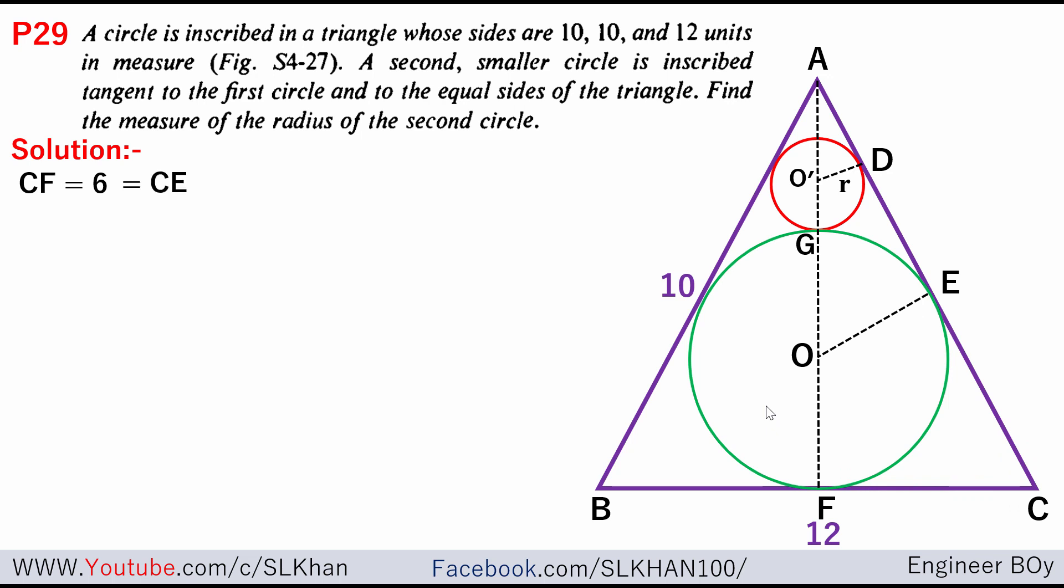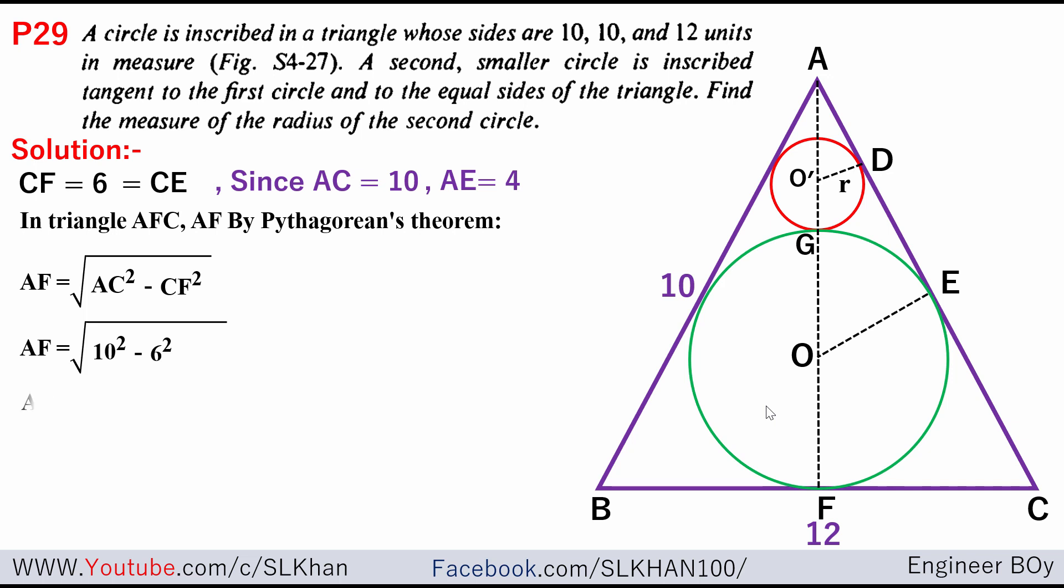Since AC equals 10, that means AE equals 4. Now in triangle AFC, distance AF can be found by using the Pythagorean theorem, which is going to be AF equals the square root of AC squared minus CF squared. That's the hypotenuse of the triangle. By putting the values, we can get AF equals 8 units.